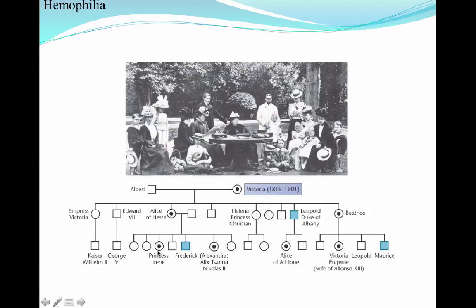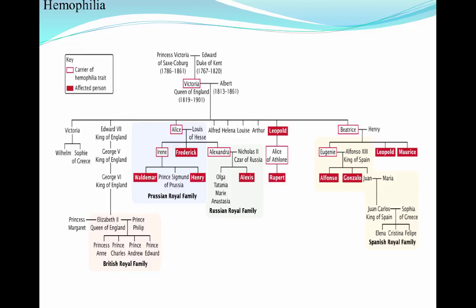Alice married and had several children, including Princess Irene, who had hemophilia, Prince Frederick, who unfortunately passed away, and Princess Alexandra. Princess Alexandra was actually Russian — Romanov royalty. We saw the extinction of that entire bloodline because of this disease.